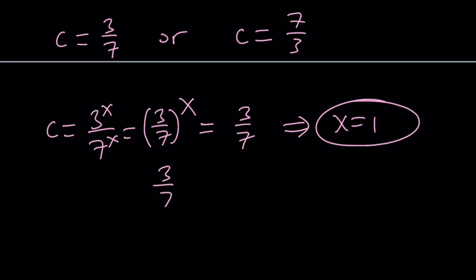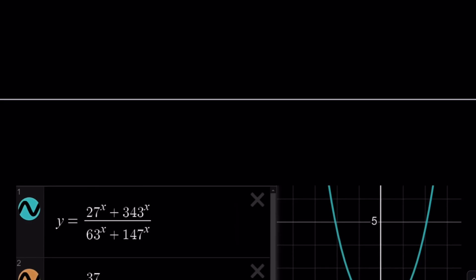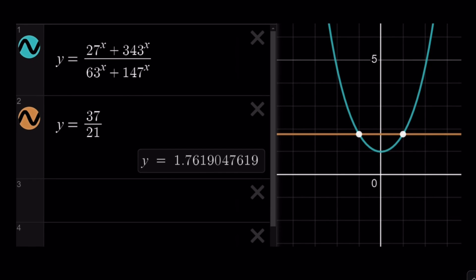And set (3/7)^x to the other c value, 7/3. From here, you're going to find x = -1. And those are the two real values for this equation. Let's take a look at the graph of this function intersecting the horizontal line at two points, x = 1 and x = -1.